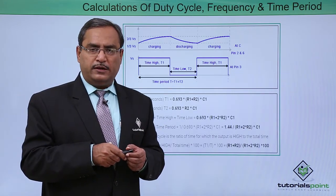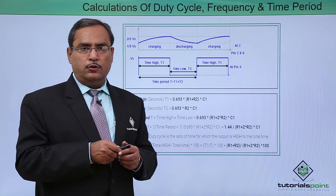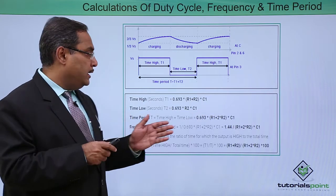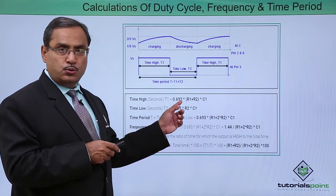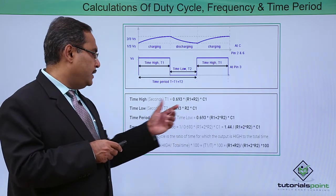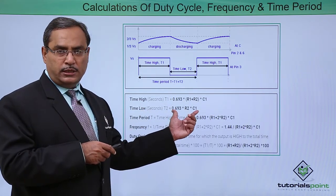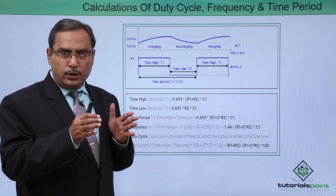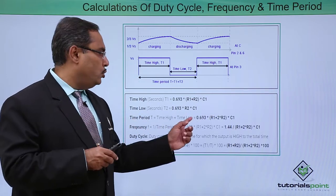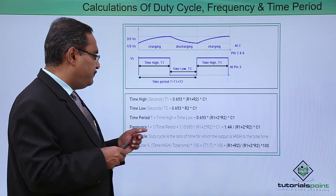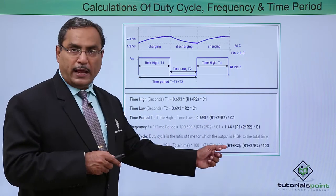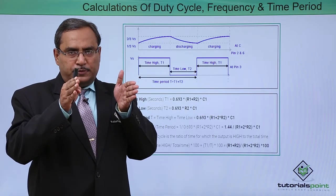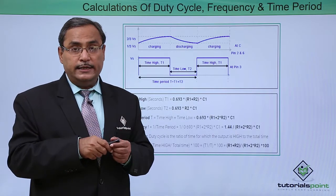The formulas are: time high = 0.693 × (R1 + R2) × C1; time low = 0.693 × R2 × C1; total time period = time high + time low; and we also have expressions for frequency and duty cycle. Duty cycle means what percentage of the total time period the output remains high.